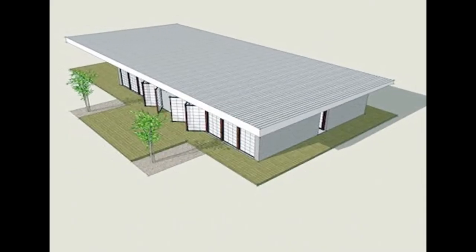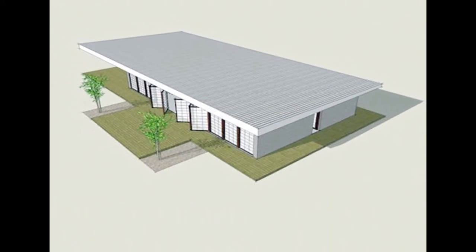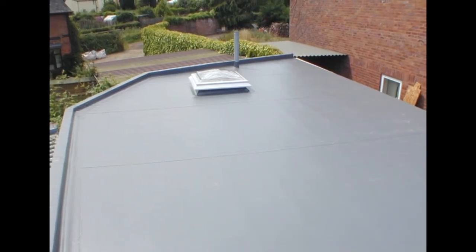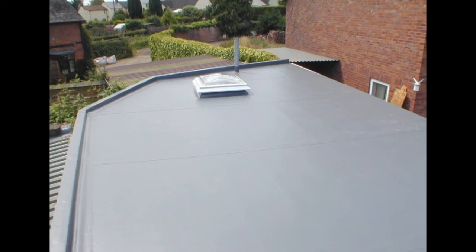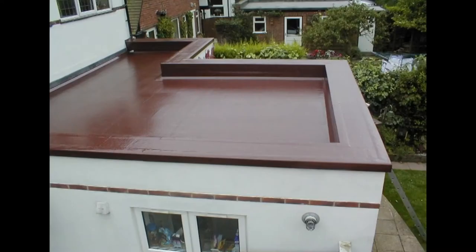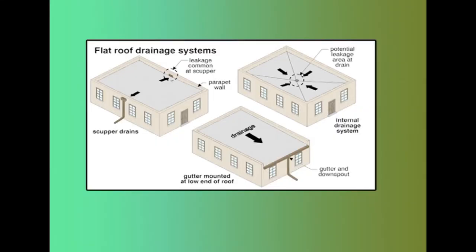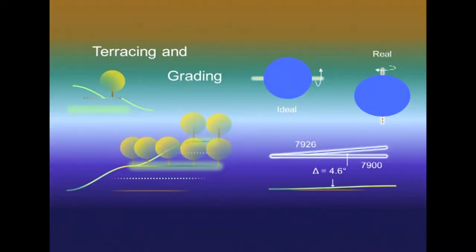A flat roof is one which is either horizontal or practically horizontal, with a slope less than 10 degrees. Even a perfectly horizontal roof must have some slope so that rainwater can be drained off easily. Flat roofs may be of reinforced cement concrete (RCC), reinforced brickwork, or precast concrete with flagstones supported on rolled steel joists. Efficient waterproofing and roof drainage is an important requirement. A layer of insulating material such as mud lime, concrete, or mud phuska is laid over the roof surface to provide adequate thermal insulation; this layer is known as terracing or grading.